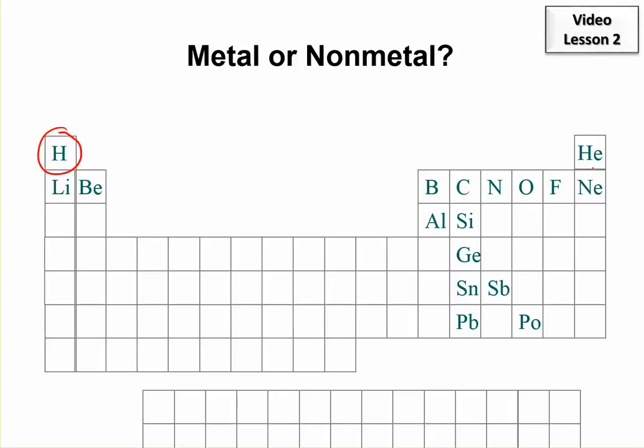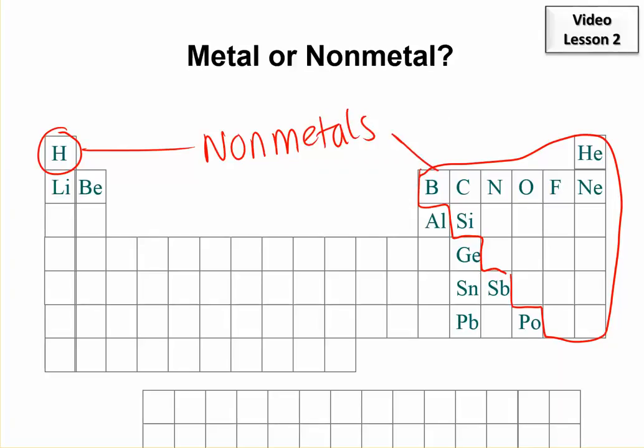Hydrogen and these elements are the nonmetals above that stair step. These are the nonmetals. Mostly over here, but we need to remember hydrogen, of course, is a nonmetal.